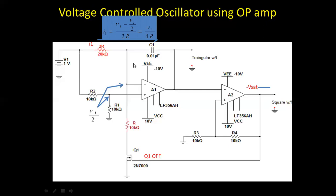When a positive voltage is applied to the integrator, a negative ramp is generated at its output. This negative ramp is compared with the threshold voltage generated by the minus Vsat condition. When the negative ramp exceeds minus Vthreshold — that is, V_minus becomes greater than V_plus — the Schmitt trigger changes its state to plus Vsat.